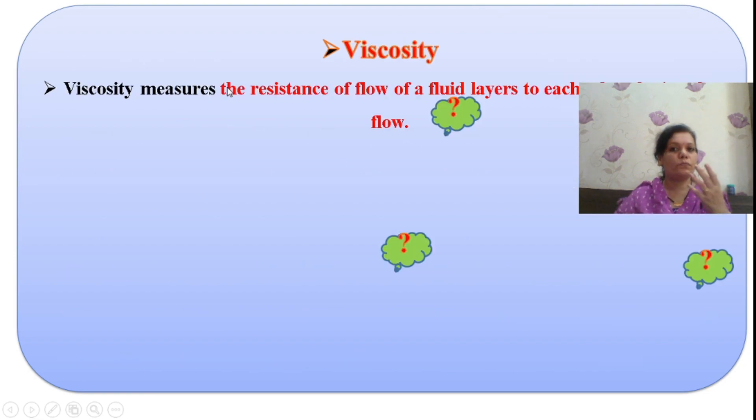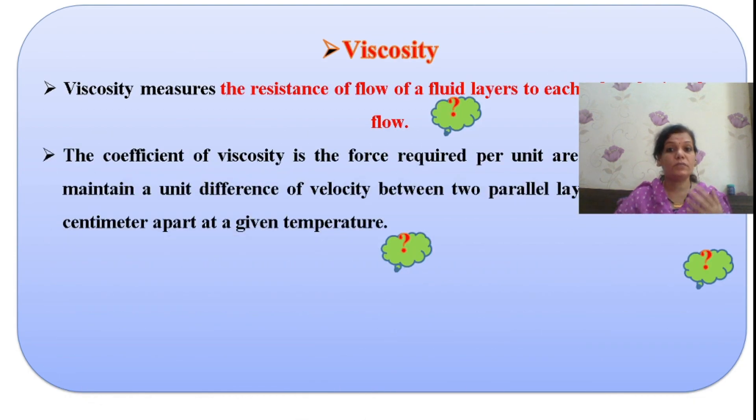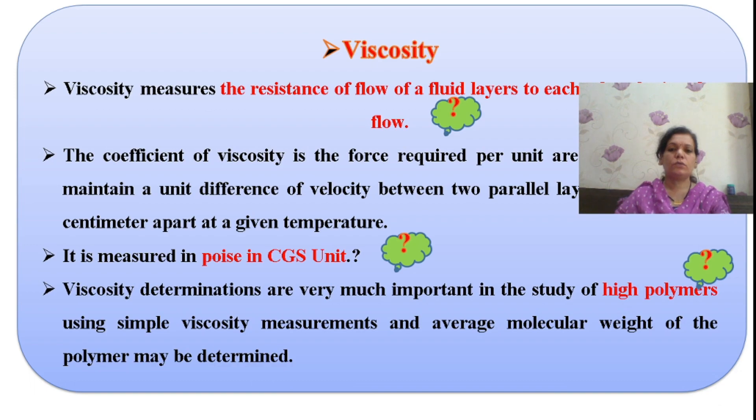One of the properties we are going to measure is viscosity, the resistance to flow of a liquid or coefficient of viscosity, which measures the force per unit area between two layers one centimeter apart at a given temperature. Viscosity has a direct impact on temperature and is measured in poise, the CGS unit.